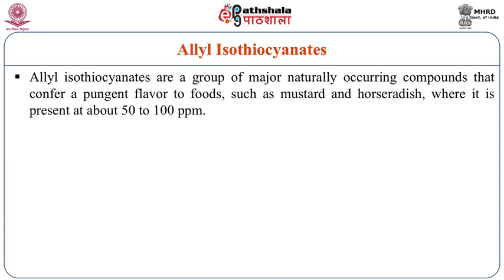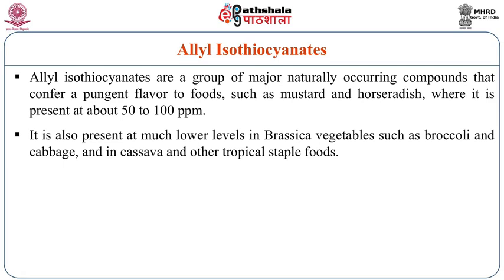The next toxicant is allyl isothiocyanates. Allyl isothiocyanates are a group of major naturally occurring compounds that confer a pungent flavor to foods such as mustard and horseradish, where they are present in about 50 to 100 ppm. They are also present at much lower levels in brassica vegetables such as broccoli and cabbage, and also in cassava and other types of staple foods.